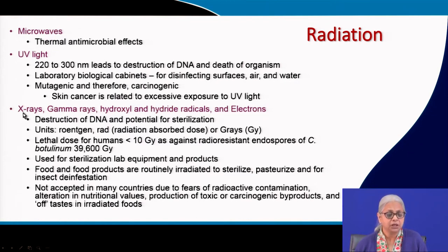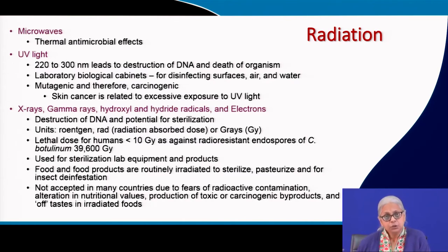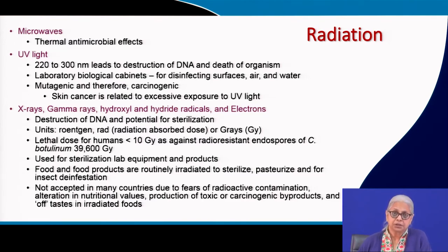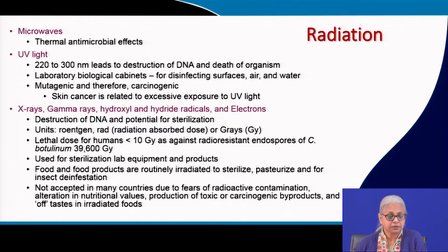Other forms of radiation are x-rays, gamma rays, hydroxyl and hydride radicals and electrons. All of these types of radiation can result in the destruction of DNA and have some potential for sterilizing both food as well as other materials. The units are roentgens, radiation absorbed units, radiation absorbed dose or grays. A lethal dose for humans is less than 10 grays, and endospores of Clostridium botulinum can withstand 39,600 grays, demonstrating their enormous longevity due to their ability to withstand high radiation, heat, and desiccation.